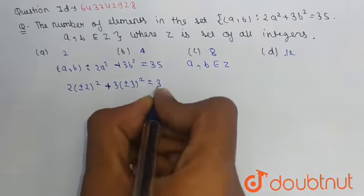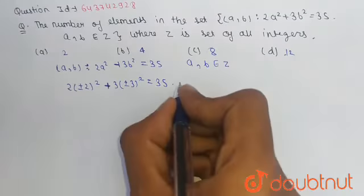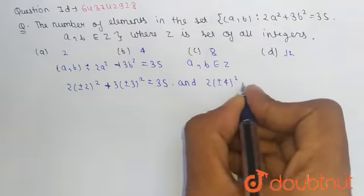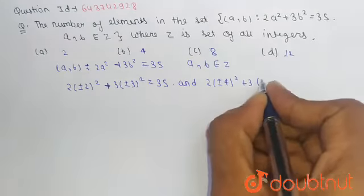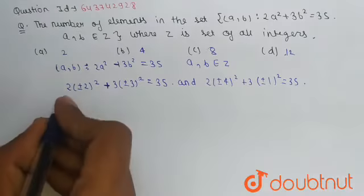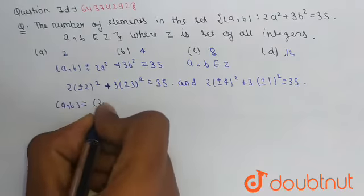Now, and we also know that 2(±4)² + 3(±1)² = 35. So from this we get (a,b) is equal to (2,